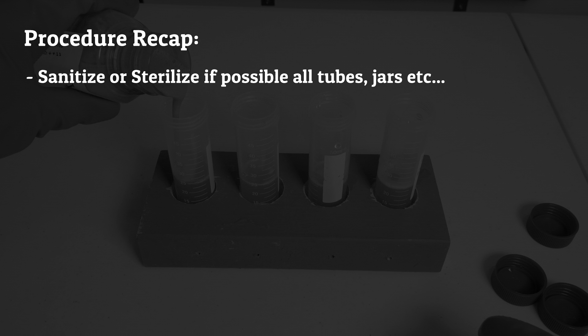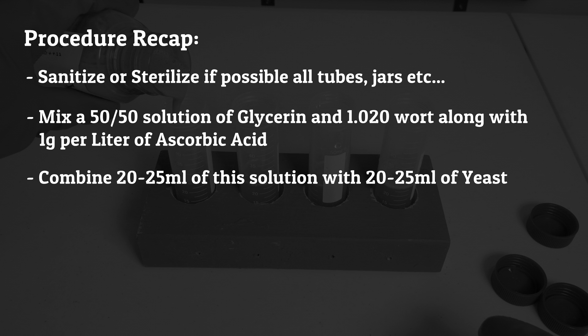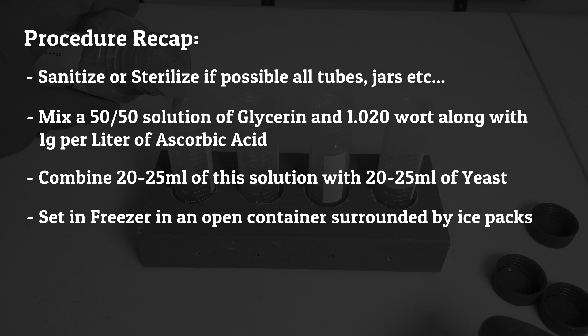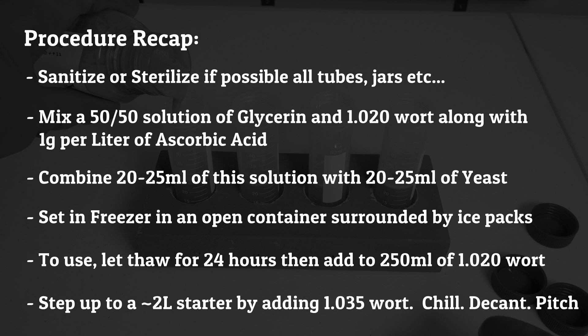Recap. Always important to clean, sanitize, and sterilize if you can. You're going to mix that 50-50 solution of glycerin and 10-20 wort along with a little bit of ascorbic acid. Combine that solution with equal part of yeast in your tube. Settle this in the freezer surrounded by some ice packs. Take a vial out, let it thaw for 24 hours and add it to 250 milliliters of wort. Then go ahead and step it up. You'll be ready to chill, decant, and pitch.